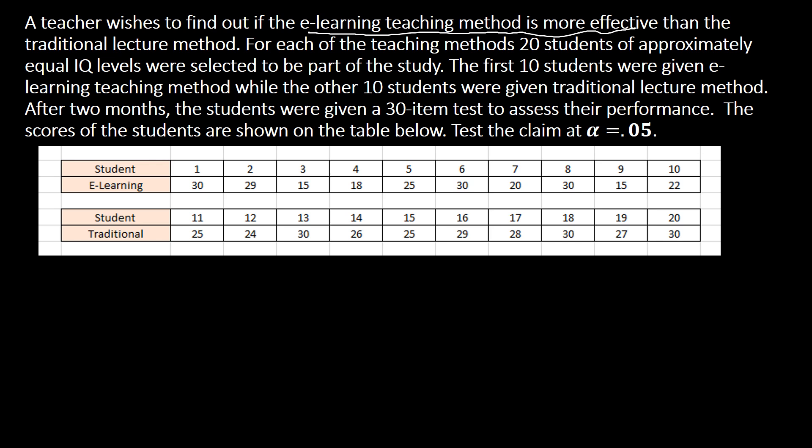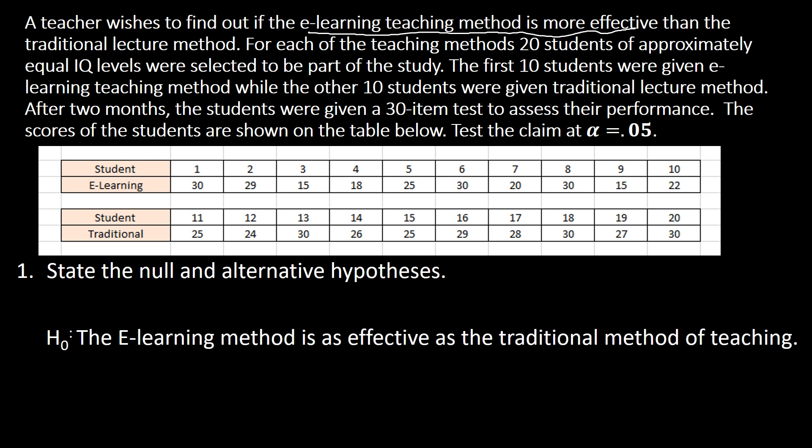Let's start by stating the null and alternative hypothesis. For the null hypothesis, regardless of the claim, we declare a statement of no difference. The e-learning method is as effective as the traditional method of teaching. In symbol, the null hypothesis H₀ is: μ₁ = μ₂.